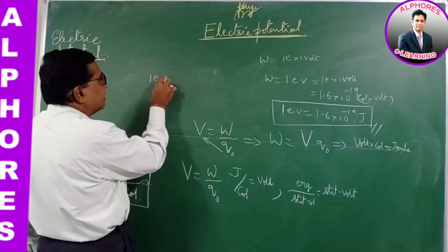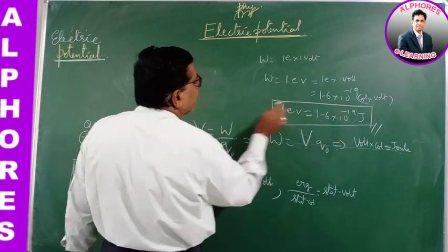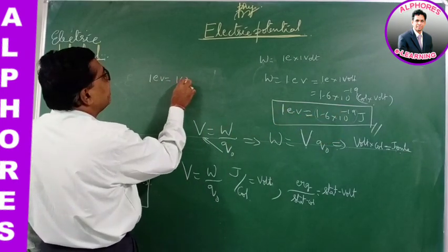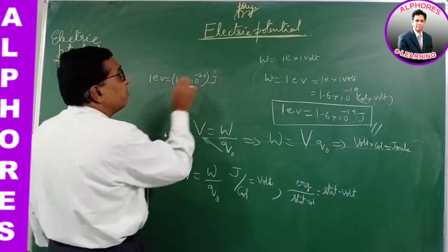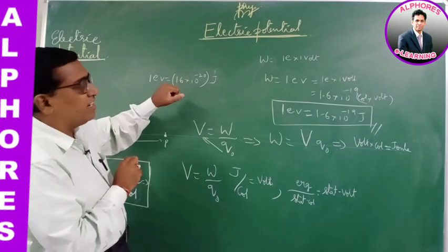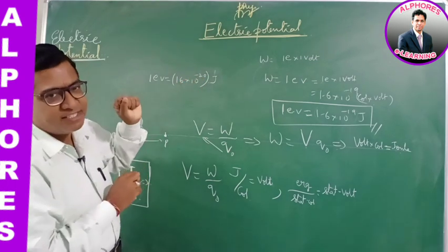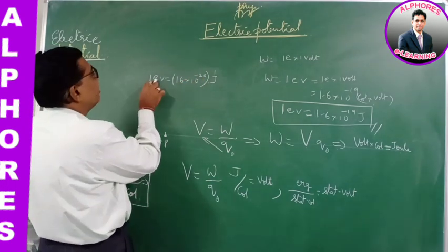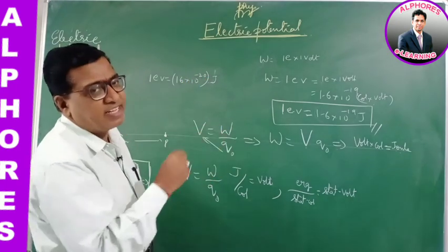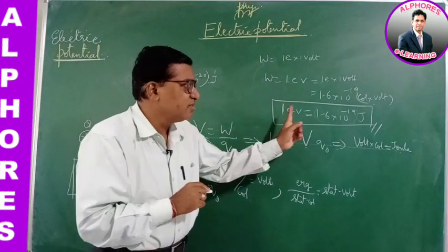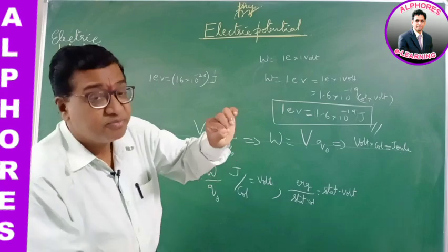While doing calculations, it is advisable to write it as 16 × 10⁻²⁰ joules instead of 1.6 × 10⁻¹⁹, which removes the decimal and makes the power a round figure, making calculation easier. Actually, it is 1.6 × 10⁻¹⁹ joules — the smallest unit of energy.